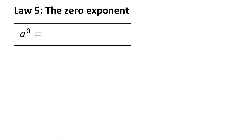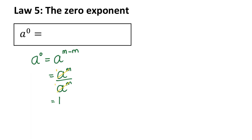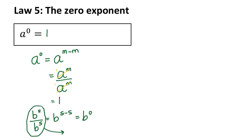The last law is the zero exponent law. If I've got a to the power of 0, that could come from a to the power of m minus m, which written as a fraction is a to the power of m over a to the power of m — using the second law of exponents. If I'm dividing two exactly equal values, the answer is 1. So whenever you have a zero exponent, it equals 1. For example, b to the power of 5 over b to the power of 5 is b to the power of 0, and dividing the same value by itself gives 1 — so those two are equal.